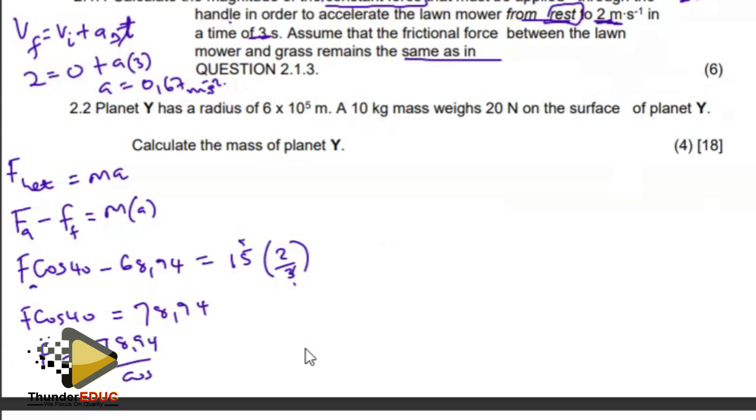When I divide both sides by the cosine of 40, 78.94 divided by cosine 40, I end up with 103.05 newtons. So that should be our force applied. That is that with that question.